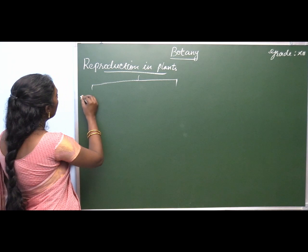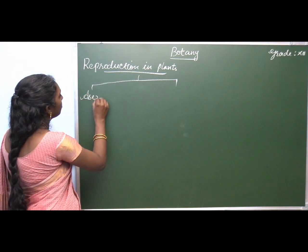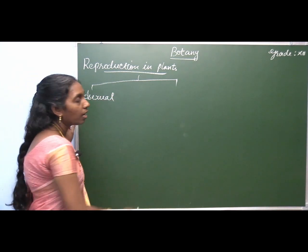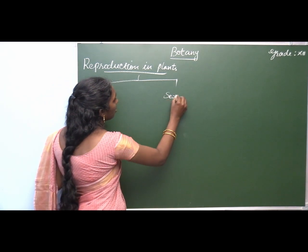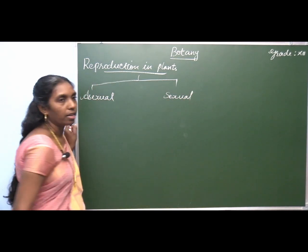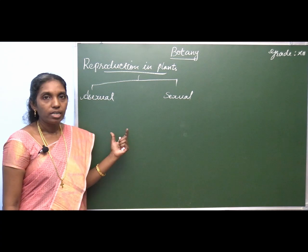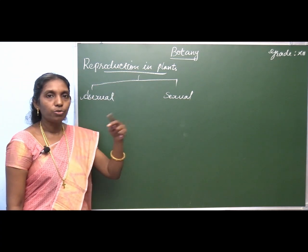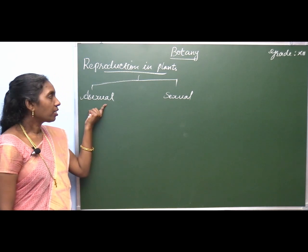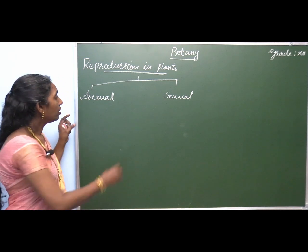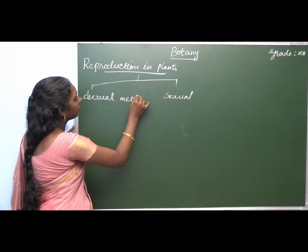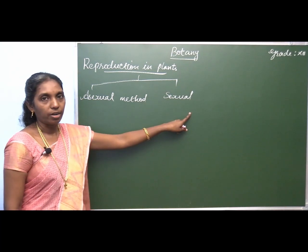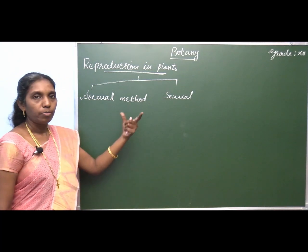Basically, the process of reproduction is categorized under two main headings: asexual reproduction and sexual reproduction. Broadly, the process of reproduction is classified under two categories — asexual method of reproduction and sexual method of reproduction. Let's see them one by one.